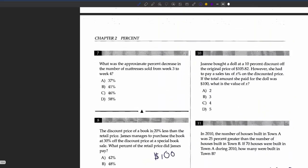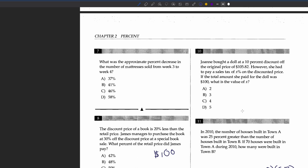Question 10: Joanne bought a doll at a 10 percent discount off the original price of $105.82. However, she has to pay a sales tax of x percent on the discounted price. If the total amount she paid was $100, what is the value of x? Since she paid a sales tax, we can convert it to a percentage. First we write the original price.